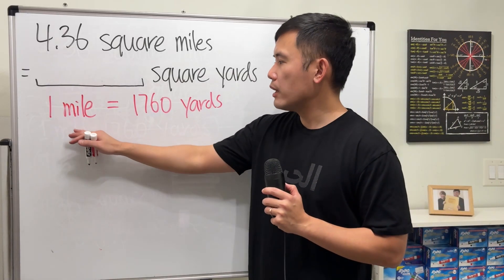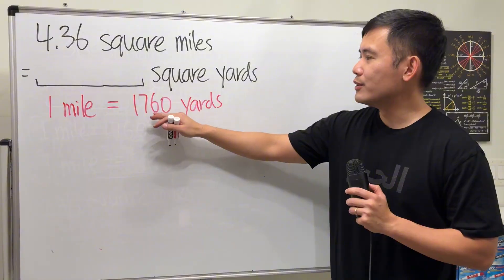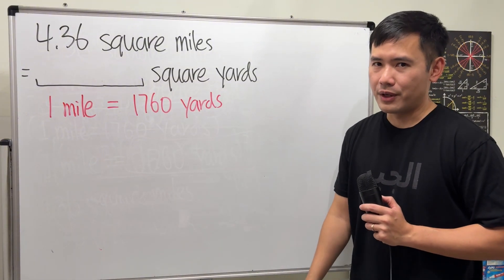They did give us that 1 mile is equal to 1760 yards. We just have to do the math from here.